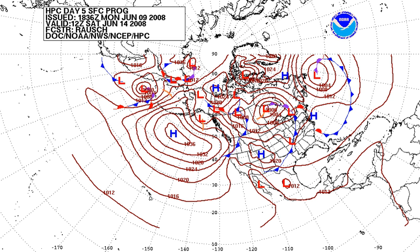The highest sea level pressure on Earth occurs in Siberia, where the Siberian High often attains a sea level pressure above 1,050 mb (105 kPa), with record highs close to 1,085 mb (108.5 kPa). The lowest measurable sea level pressure is found at the centers of tropical cyclones and tornadoes, with a record low of 870 mb (87 kPa). See atmospheric pressure records.